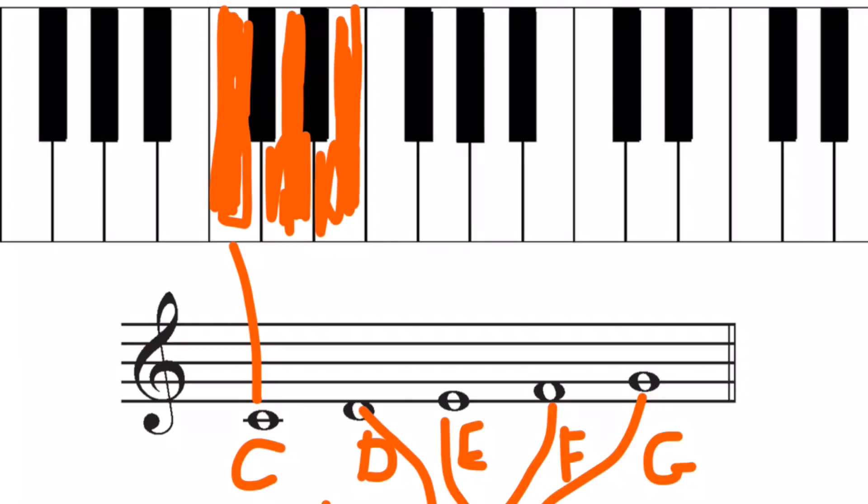E is the note on the right hand side of two black notes. D. F is the note on the left hand side of three black notes, and G is the note next to that.